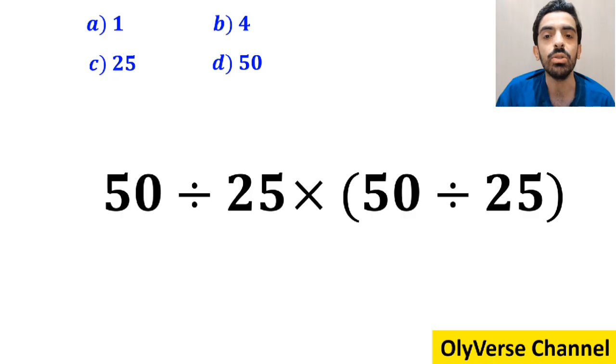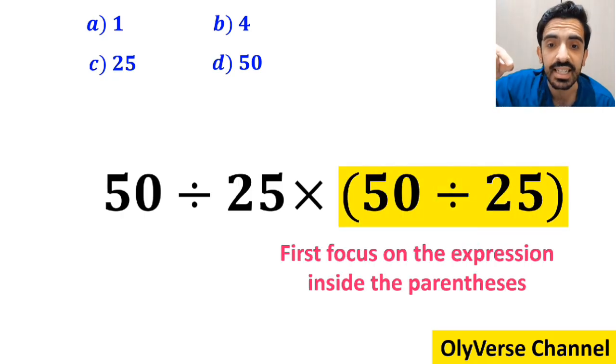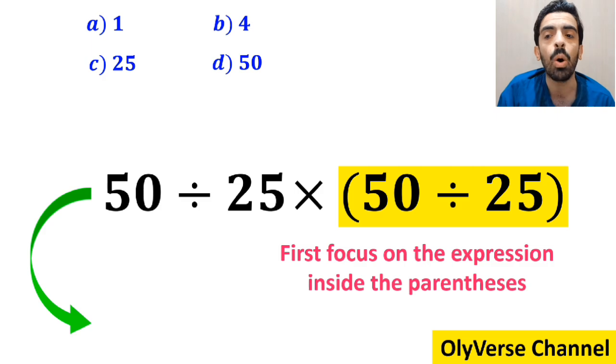Many people when starting to solve this question first focus on the expression inside the parenthesis and instead of considering the whole expression they rewrite it as 50 divided by 25 then times 2.